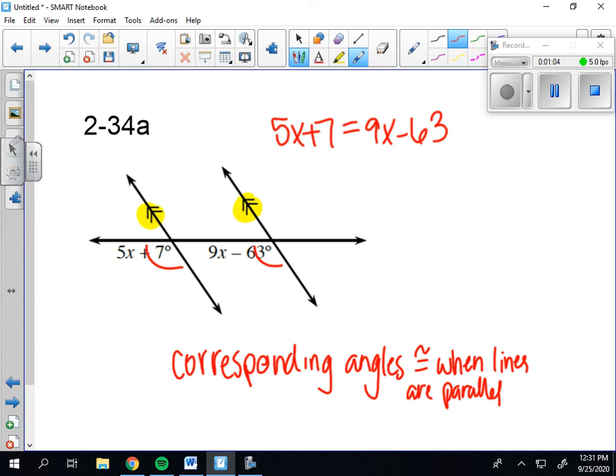So to go ahead and solve that problem, what I'm gonna do is move my x's to the same side. So 7 equals 9x minus 5x, which is 4x, minus 63.